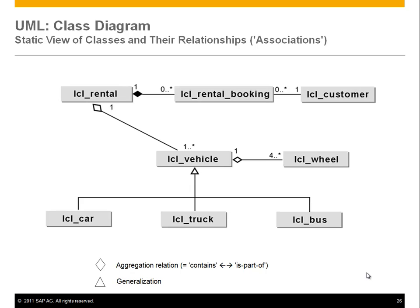If you look at the rental, the vehicle or vehicle assignment is part of the rental. There are different kinds of diamonds: the fully filled black diamond and the white empty diamond. The difference is about the strength of coupling of the lifetime. For example, if you have a rental, you must have a rental booking — if you delete the rental, the booking is also gone because they belong together.